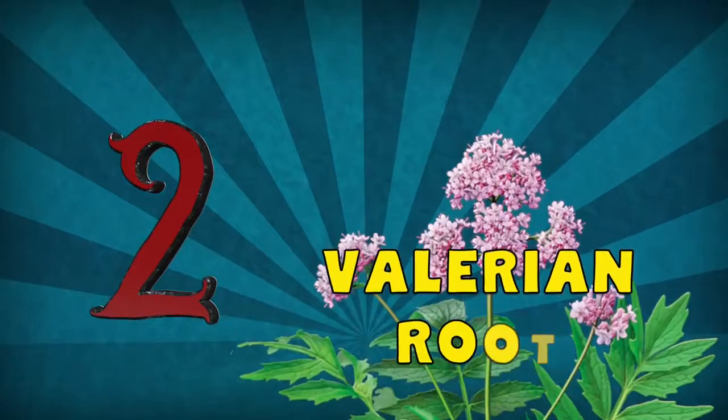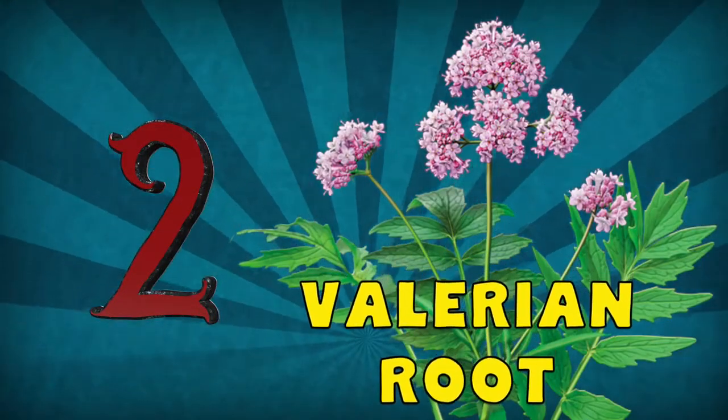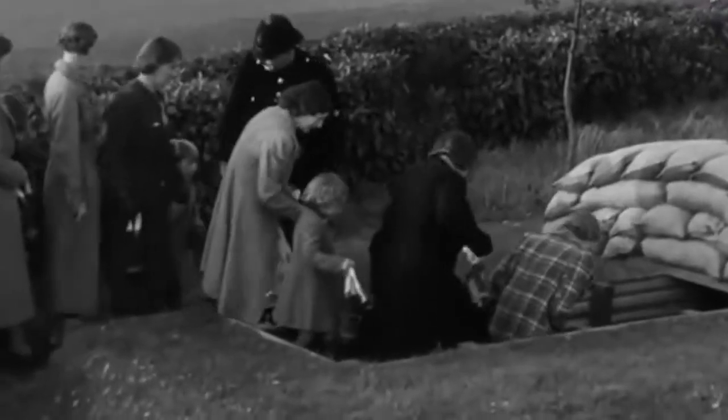Number 2, Valerian Root. Considered one of the best for calming a racing mind. Historically, valerian was used in England during World War II to help relieve stress and anxiety caused by air raids. You can find valerian in capsule or liquid form. Valerian root is also commonly used as a tea.